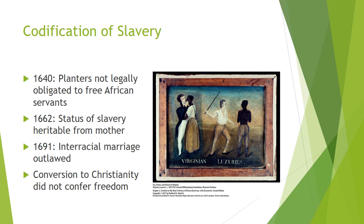Within a couple of generations, however, local courts and legislatures began to codify a status for African servants that was different from that of white servants. Starting in 1640, you begin to see this legal transformation. Virginia courts acknowledged that planters were not legally obligated to release Africans from servitude because they hadn't signed indentures. John Punch, a black servant who ran away with two white servants, was sentenced to serve his master for the time of his natural life, while his white comrades received only an additional year of service.